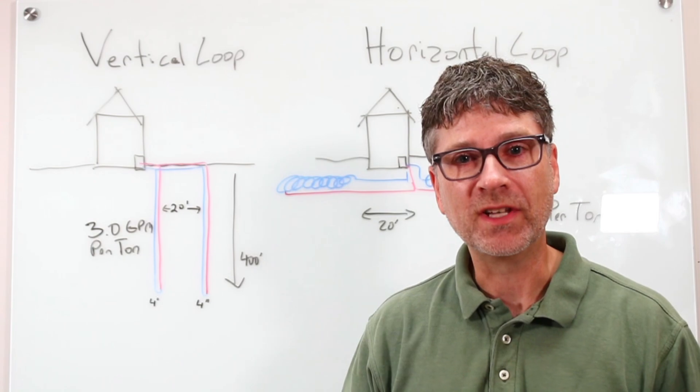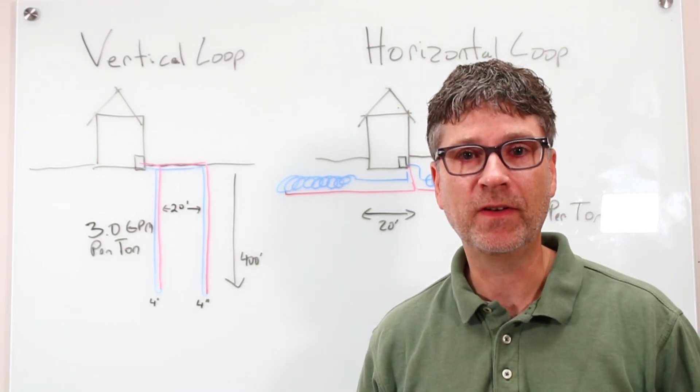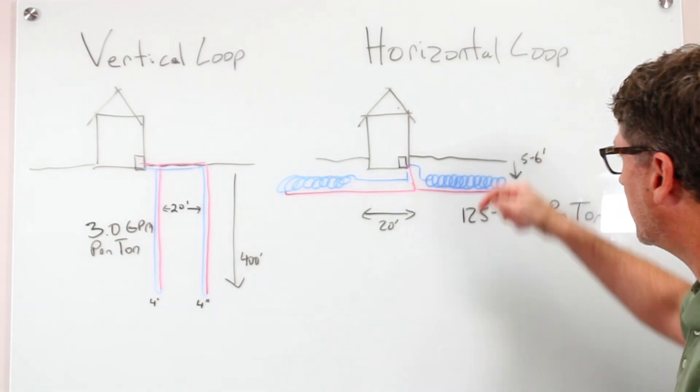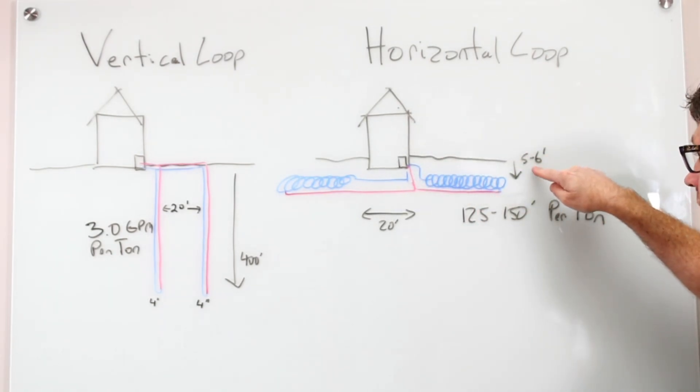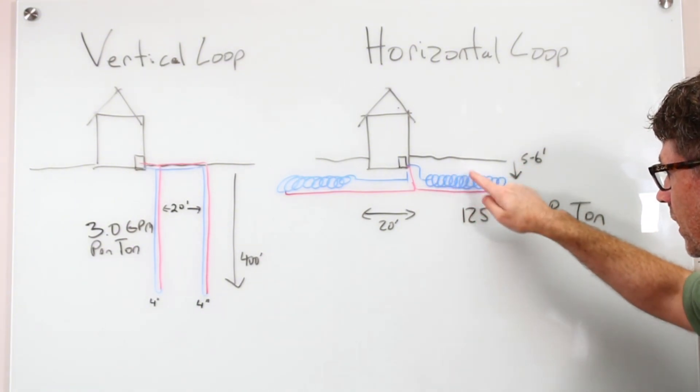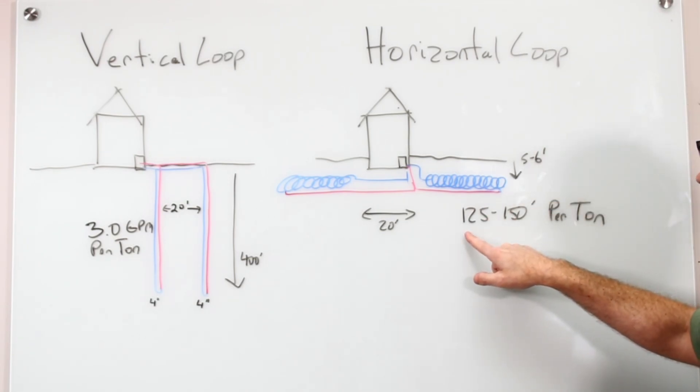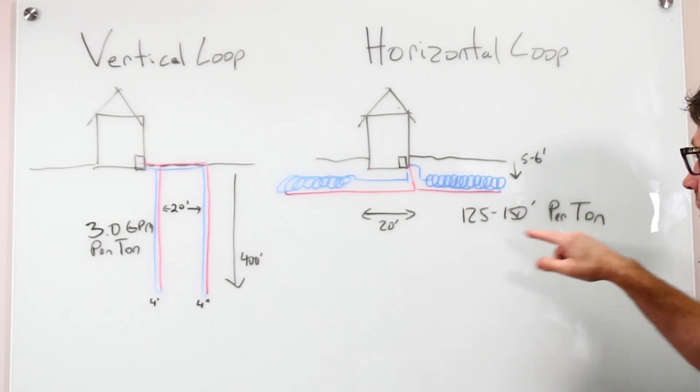Next up is the horizontal loop. And if you have enough land, this is the most cost-effective option. In a horizontal loop, you have a trench that is dug five to six feet deep. You lay out the pipe kind of like it's a slinky all the way down the trench, and you're looking for about 125 to 150 feet per ton of system.